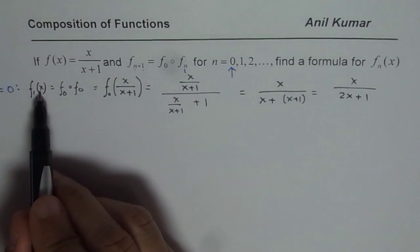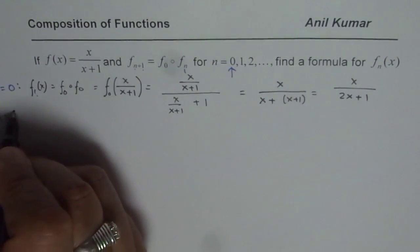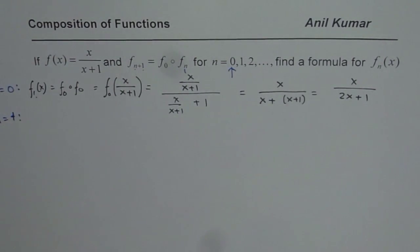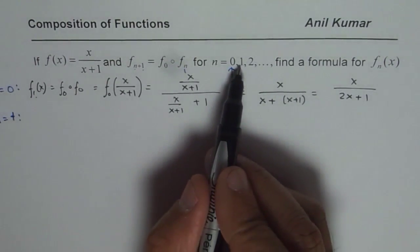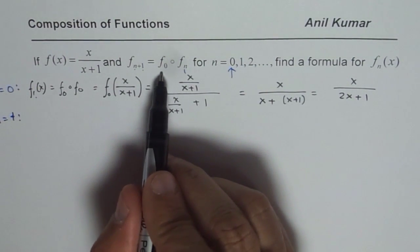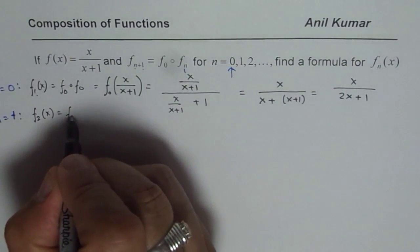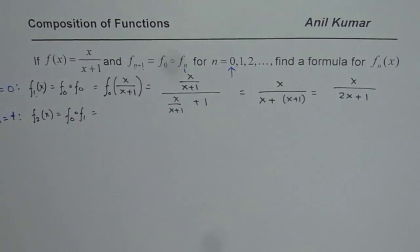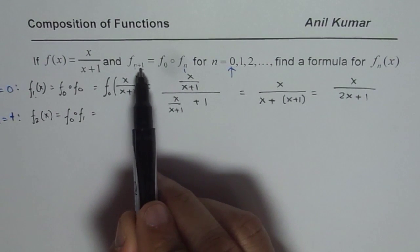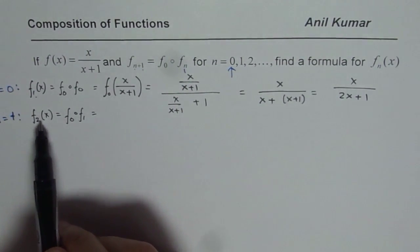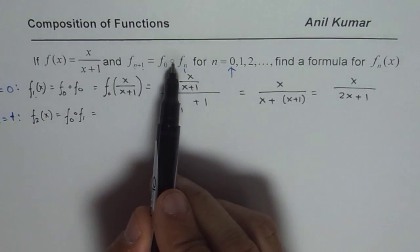Now we substitute n equals 1. When I substitute n equals 1, I use f₁ and combine it with the previous term. So f of 2 equals f of 0 of f of 1. When I substitute 1, I get f of 0 of f of 1, and 1 plus 1 is 2 — so I get f₂ of x.